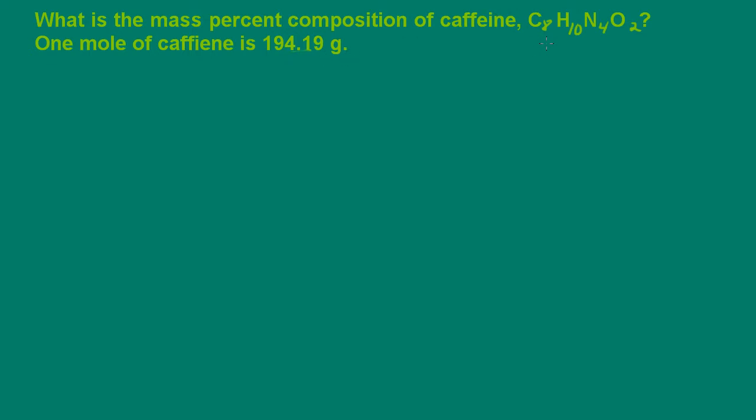Well, let's take a look at the formula here. We have 8 carbons, 10 hydrogens, 4 nitrogens, and 2 oxygens. Now, we're told that one mole of caffeine is 194.19 grams.